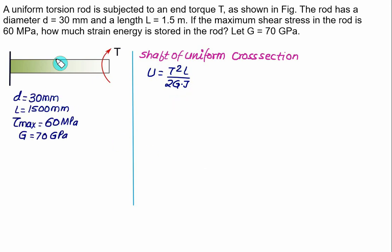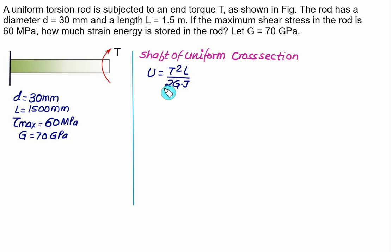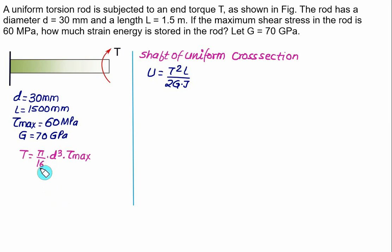The diameter is equal to 30 mm, length equal to 1.5 m (1500 mm), maximum shear stress equal to 60 MPa, and the value of G is given as 70 GPa. Using the value of τ_max and diameter, we can first calculate the torque, and the rest of the values are known. So let us first calculate what is the torque. For a solid shaft, the torque is given as (π/16) × d³ × τ_max.